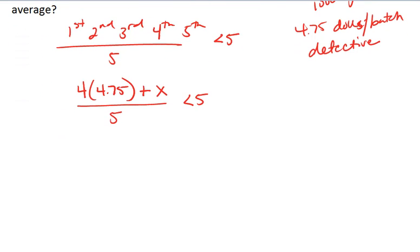Now we have an inequality set up, and we can solve. We can multiply both sides by 5.